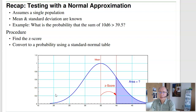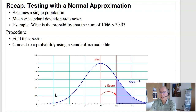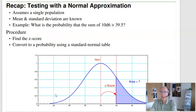A normal approximation is a pretty good assumption due to the central limit theorem. With a normal approximation, you have a mean and standard deviation. If you know the mean and standard deviation, you don't need to use a t-test — just use a normal approximation. For example, you can calculate the probability that the sum of 10 rolls of a die is greater than 39.5.